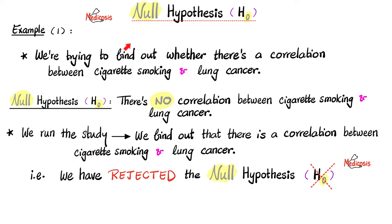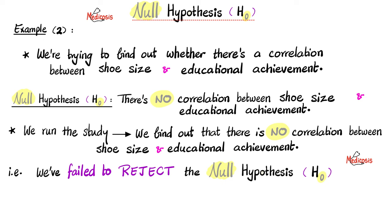Example number one: we're trying to find out whether there is a correlation between cigarette smoking and lung cancer. The null hypothesis will claim that there is no correlation, because it's called the null hypothesis. Then we conduct the study, find out that there is indeed a correlation between cigarette smoking and lung cancer, and we have successfully rejected the null hypothesis.